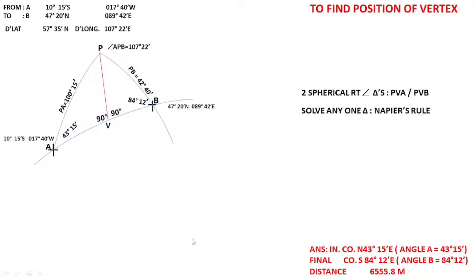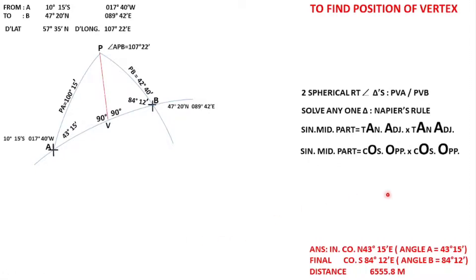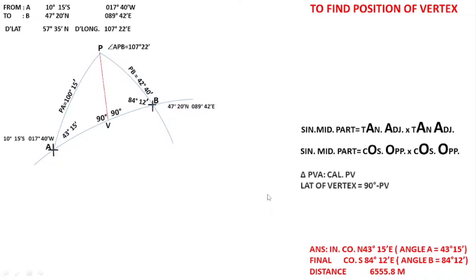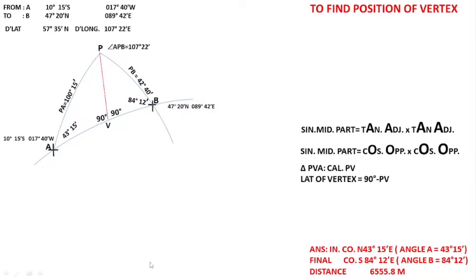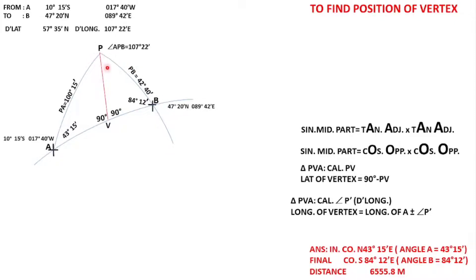I can solve any one of them using Napier's Rules. You will excuse me that I keep repeating this because I want you to be conversant with it. We have to find out the position of the vertex. For finding the position, we should know PV, because the latitude is measured from the equator to the point, and if I find out PV, then 90 minus PV will be my latitude. The second thing I have to find out is the longitude, and for that I should find out the D-long between the meridian of either position A or position B.